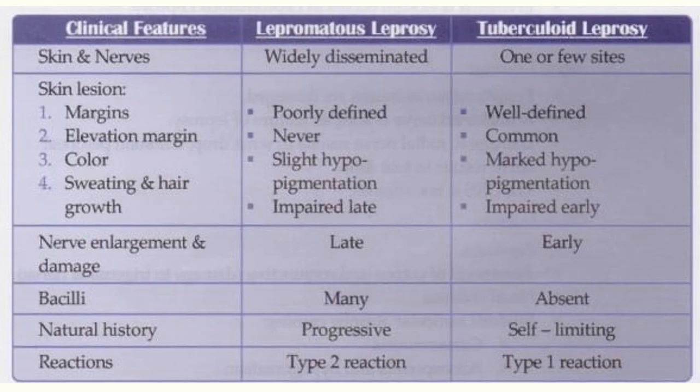In terms of skin and nerve involvement, lepromatous leprosy shows widely disseminated involvement, whereas tuberculoid leprosy involves only one or a few sites. Skin lesion margins in lepromatous leprosy are poorly defined, while in tuberculoid leprosy the margins are well defined.